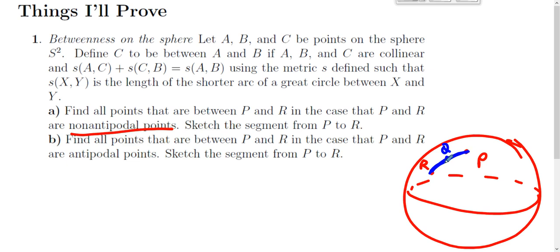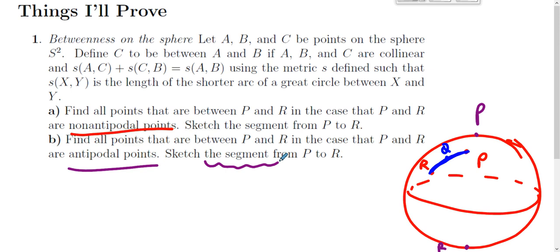Why? If you pick some point Q on that blue segment, then the distance from P to Q plus the distance from Q to R equals the distance from P to R. In the case where P and R are antipodal points — think of P at the very top and R at the very bottom — it becomes difficult to talk about betweenness, because every great circle passes through P and R. So the segment is not well-defined; we can't even talk about it.